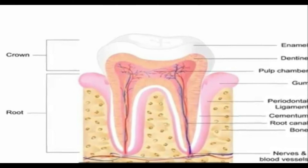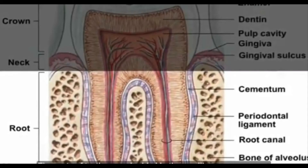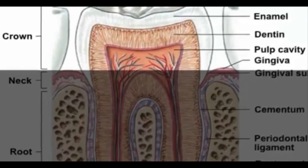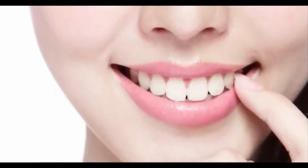Teeth are composed of two major parts: the crown and the root. The roots of teeth are embedded in the maxilla — the upper jaw — or the mandible — the lower jaw — and are covered by our gums. The crown is the visible portion that extends above the gums. Enamel is a glossy, white, hard coating composed primarily of the mineral crystalline calcium phosphate.